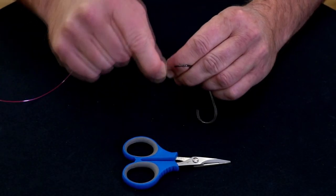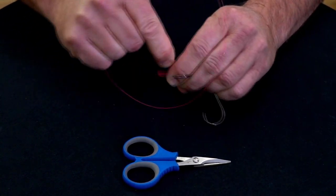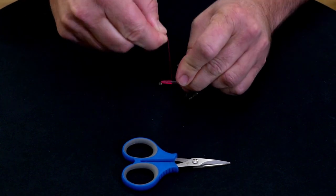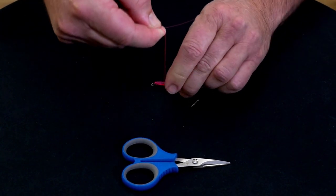Just follow that around all the way down the shank until you've gone down almost in line with the point. It just depends on the size of the hook.